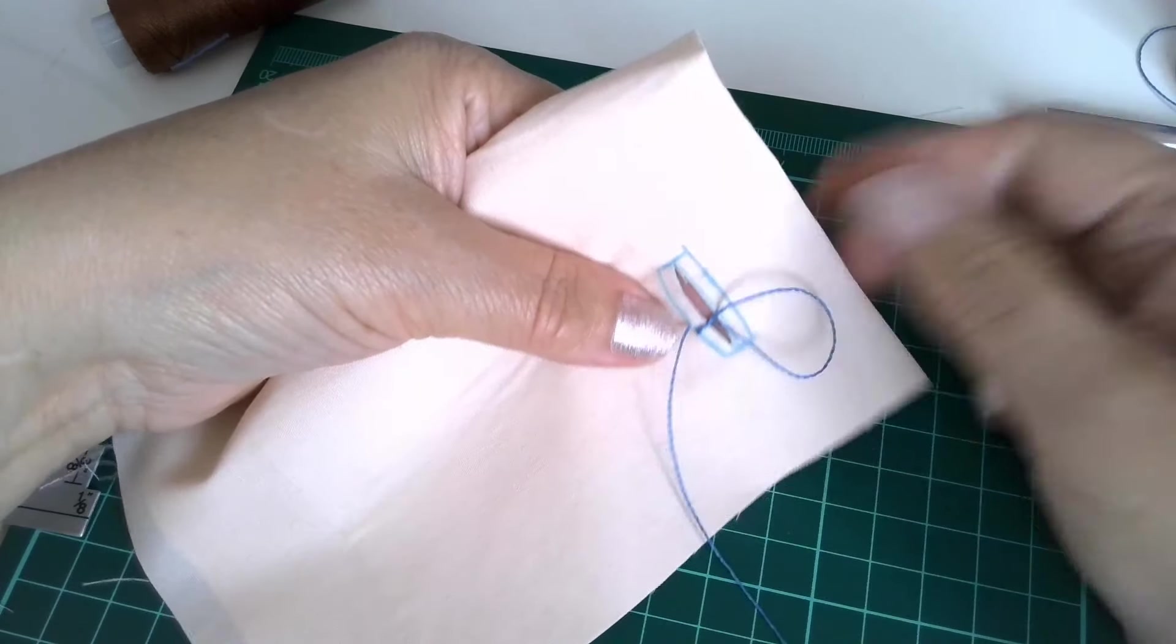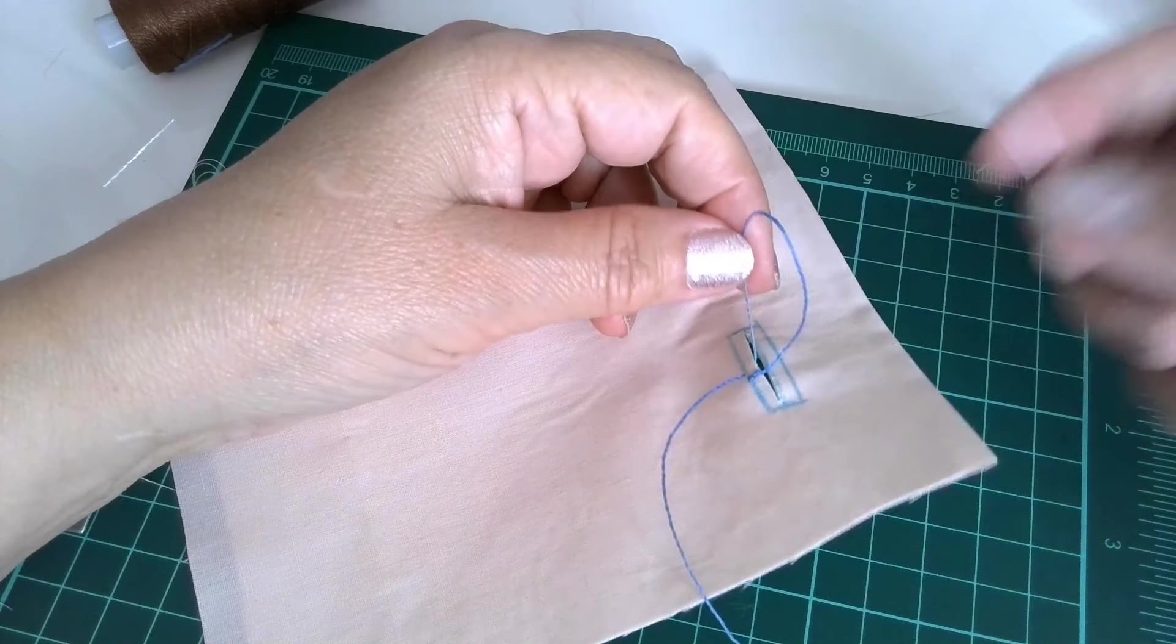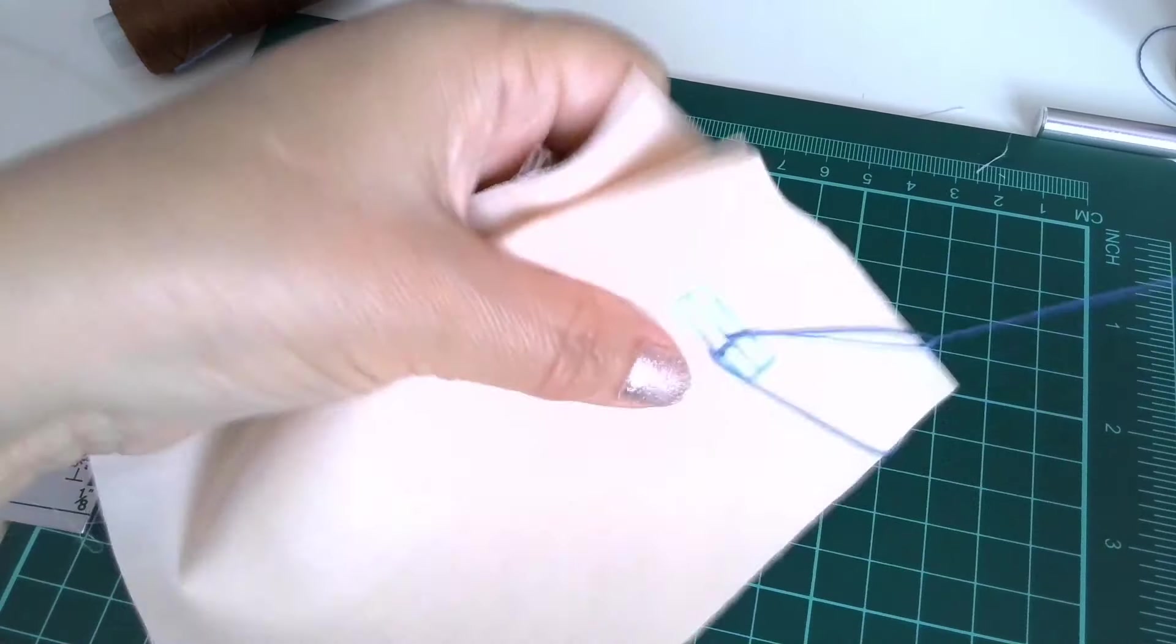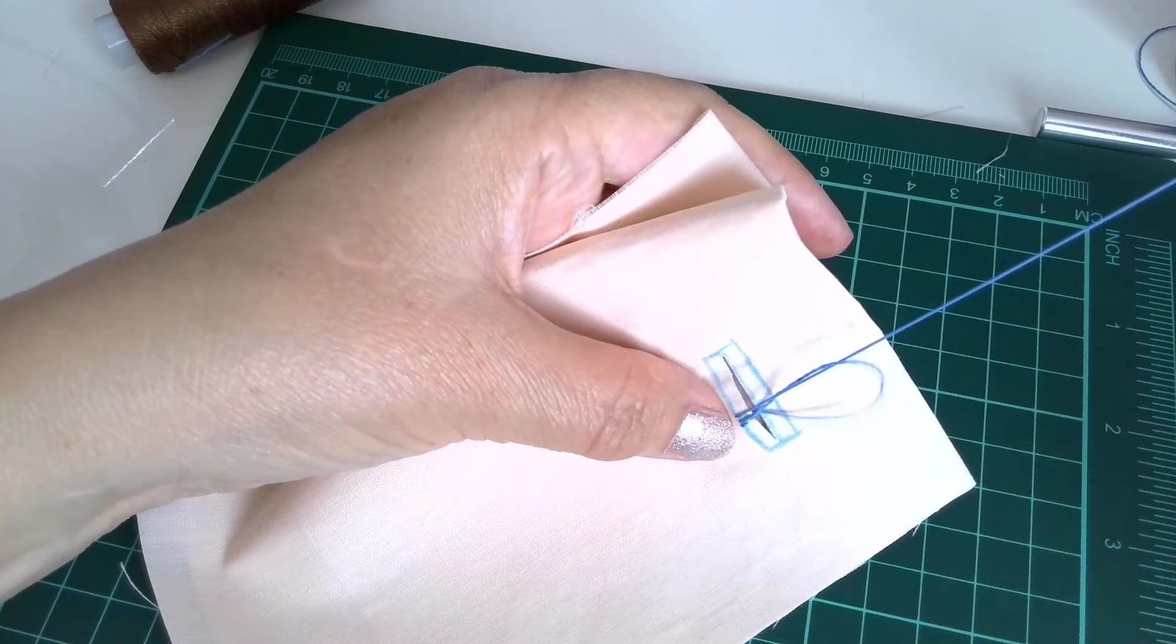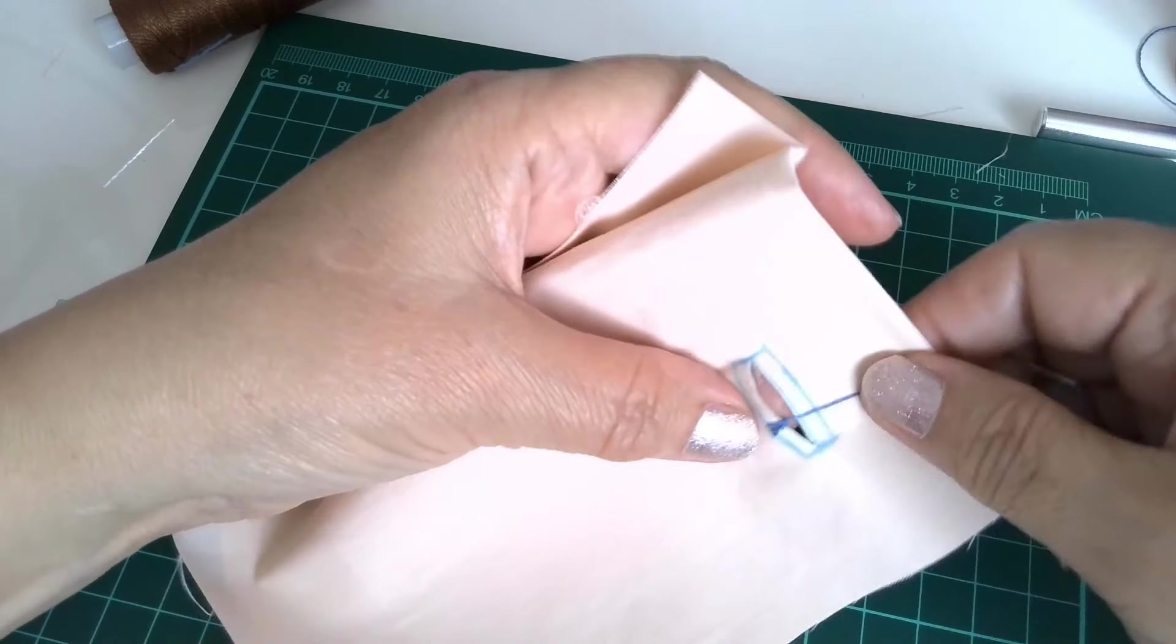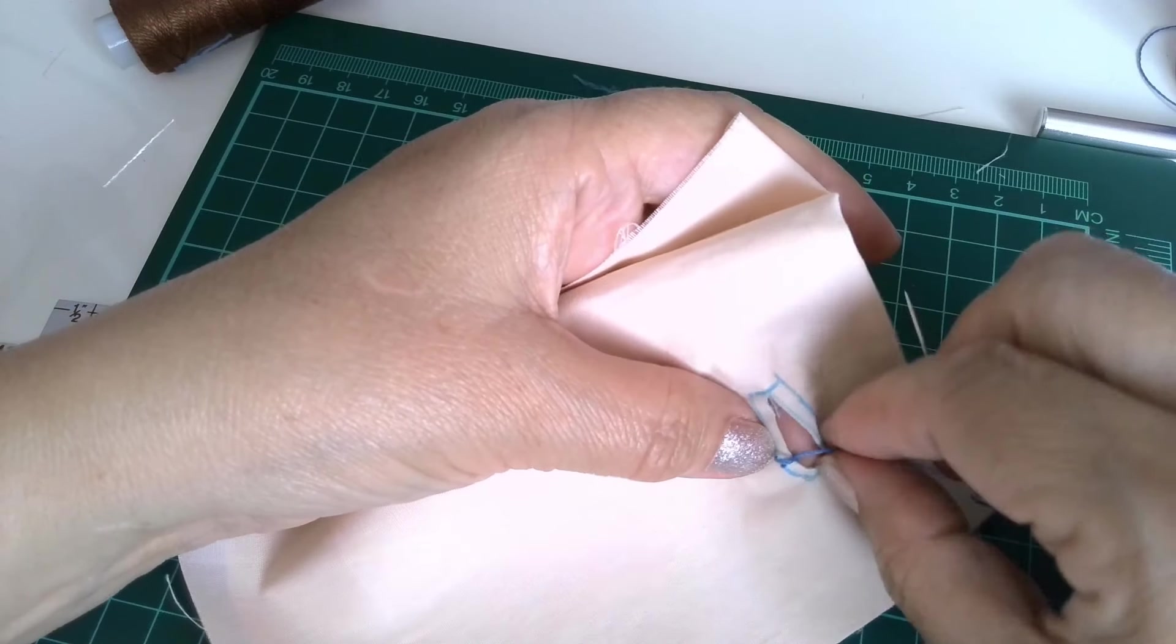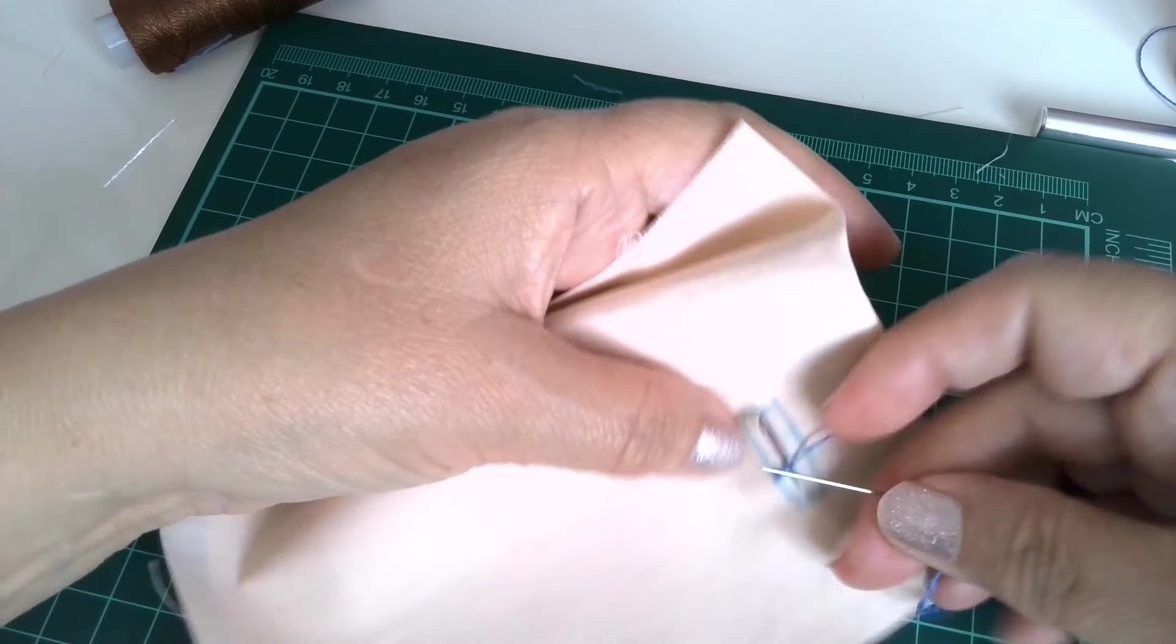Okay, so see the loop. Now you have to put the needle from down up. So it will make a knot. It will make a knot right at the edge.